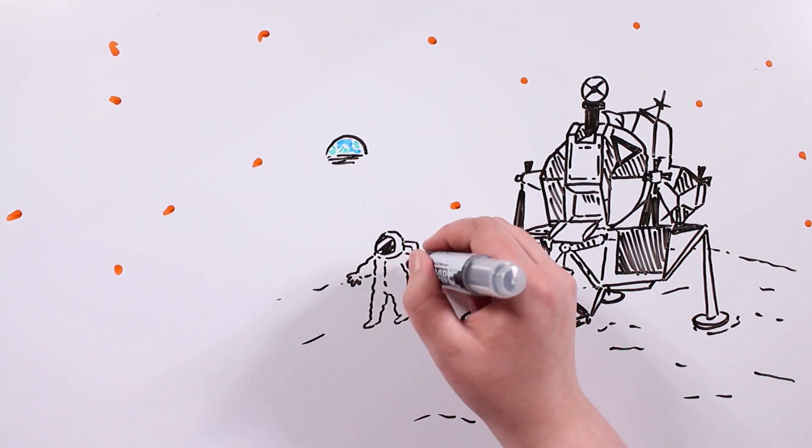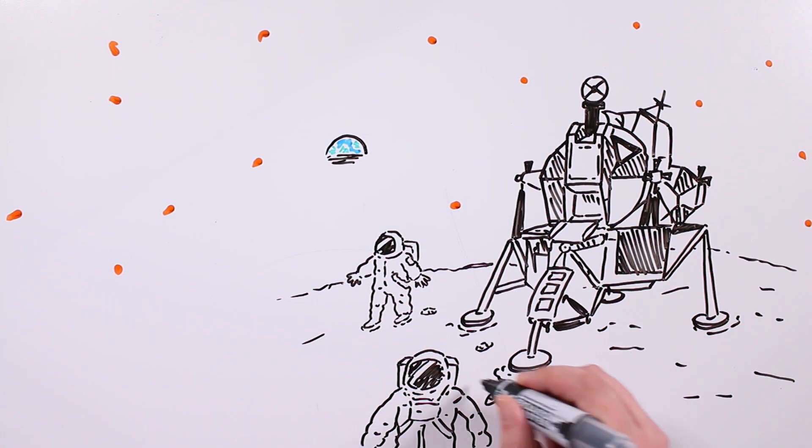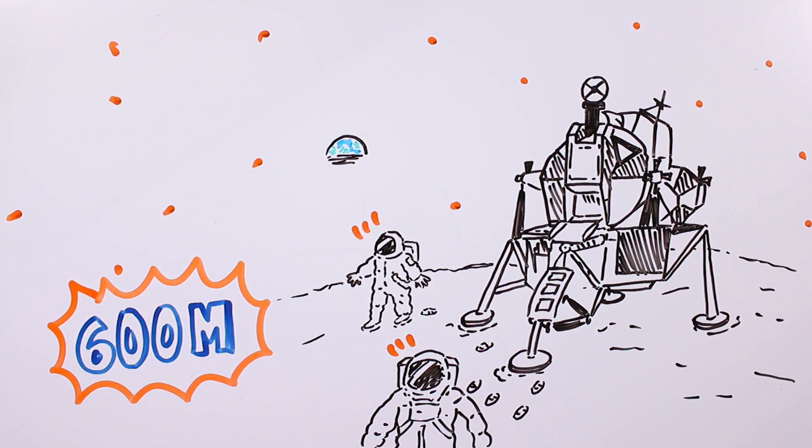Six hours later, commander Armstrong and Buzz Aldrin went outside to step on the lunar surface, a moment followed by millions of people everywhere on TV.